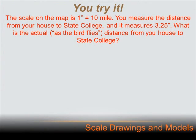You try this one. Hit your pause button, and when you get done with the problem, hit your forward key, and I'll show you how to do it. You measure the distance from your house to State College, and it measures 3.25 inches. What is the actual, as the bird flies, distance from your house to State College? As the bird flies means it's a straight line between those two points, not the way you'd travel on a road, because the road's not going to run directly between State College and your house. It's going to be less distance as the bird flies or in a straight line.